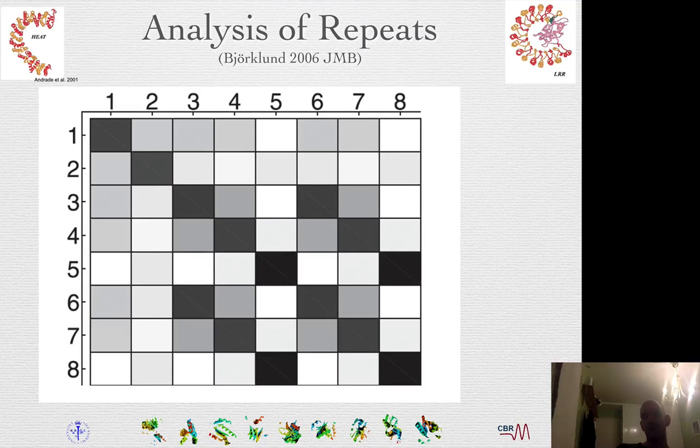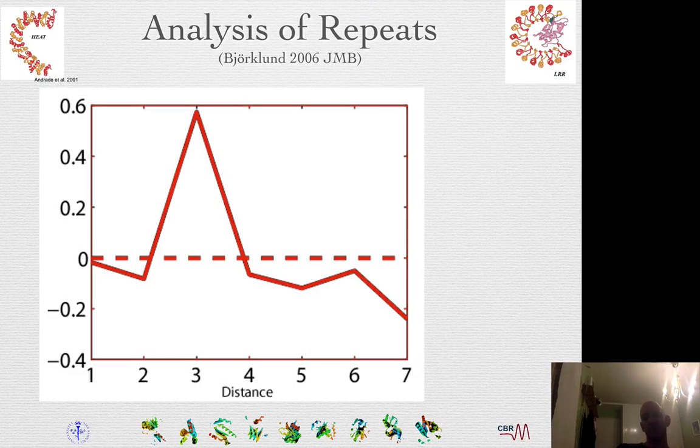Now we will look at the repeat pattern. You can see that domain three is similar to six, four is similar to seven, and five is similar to eight. This is a matrix that shows the similarity between every pattern of the domains. And this will look at the autocorrelation functions, which will also have a peak at a distance of three.